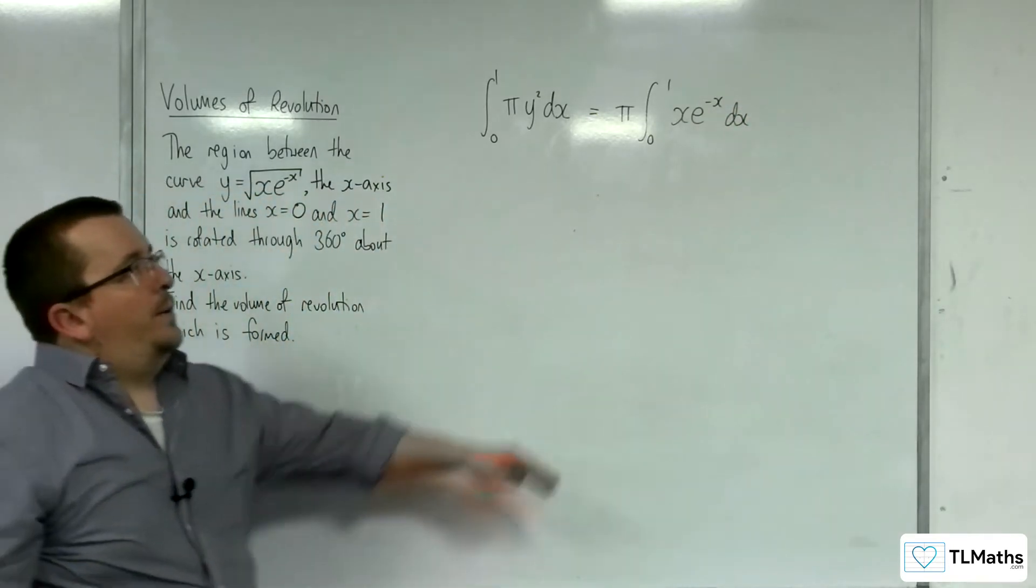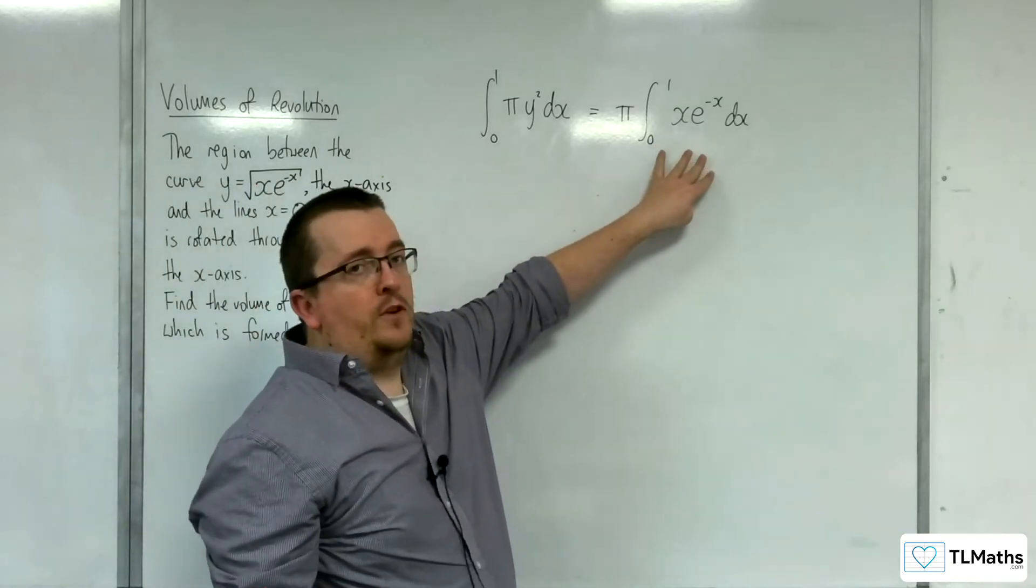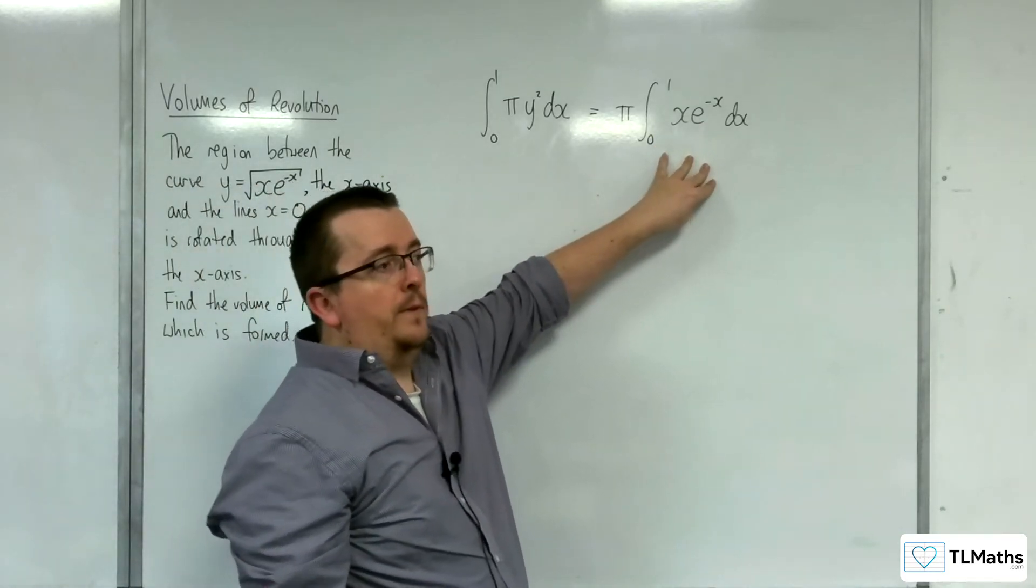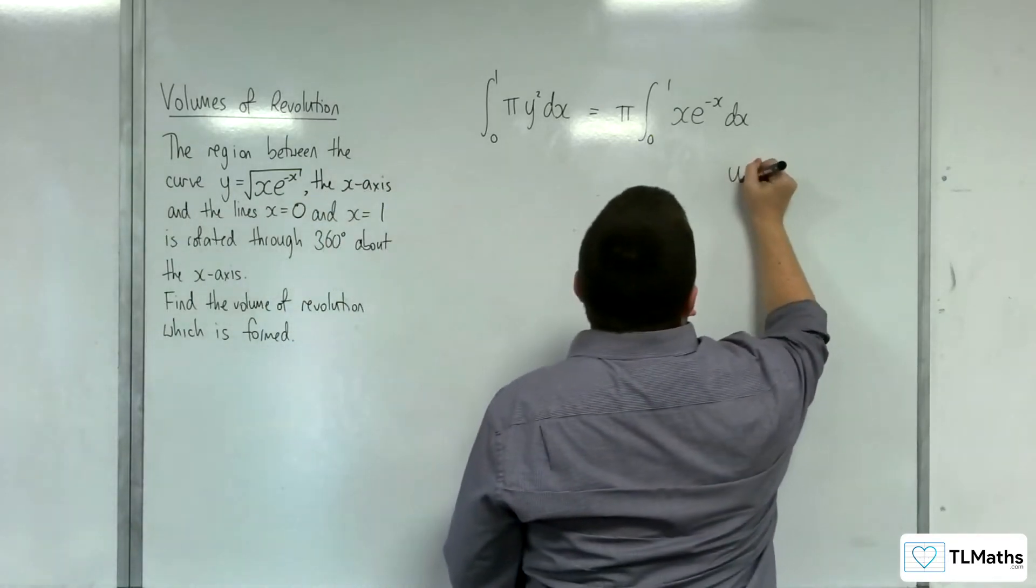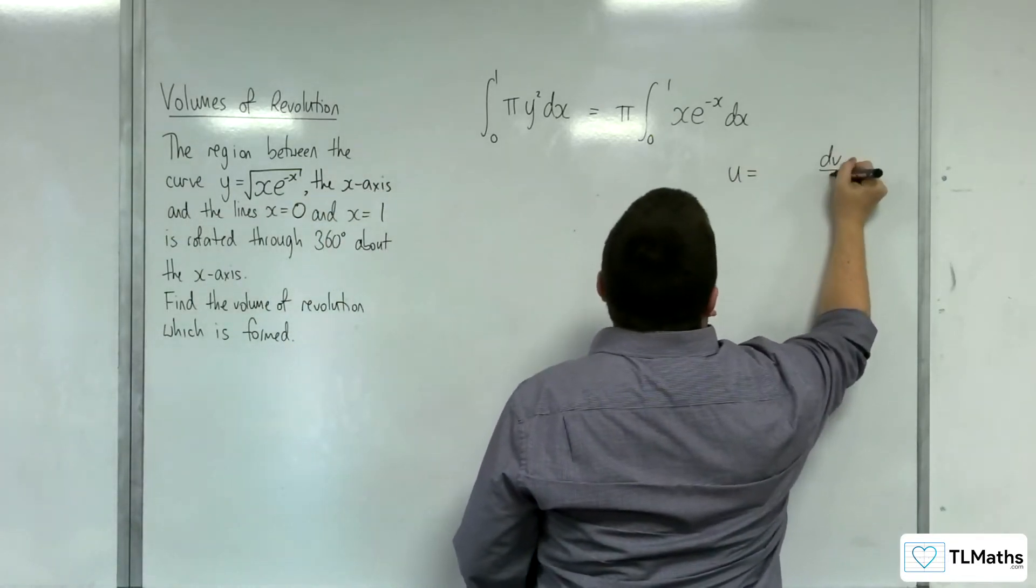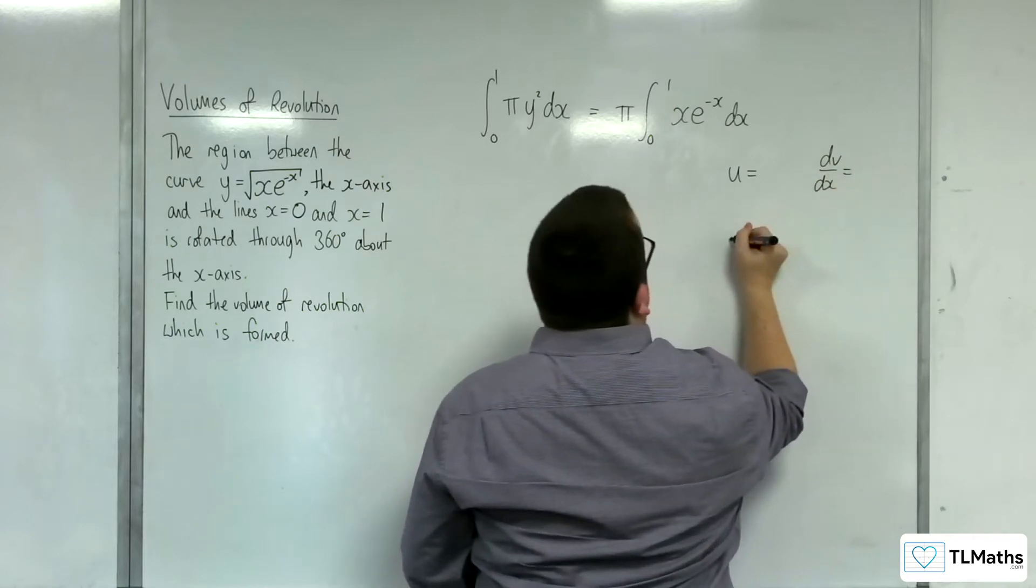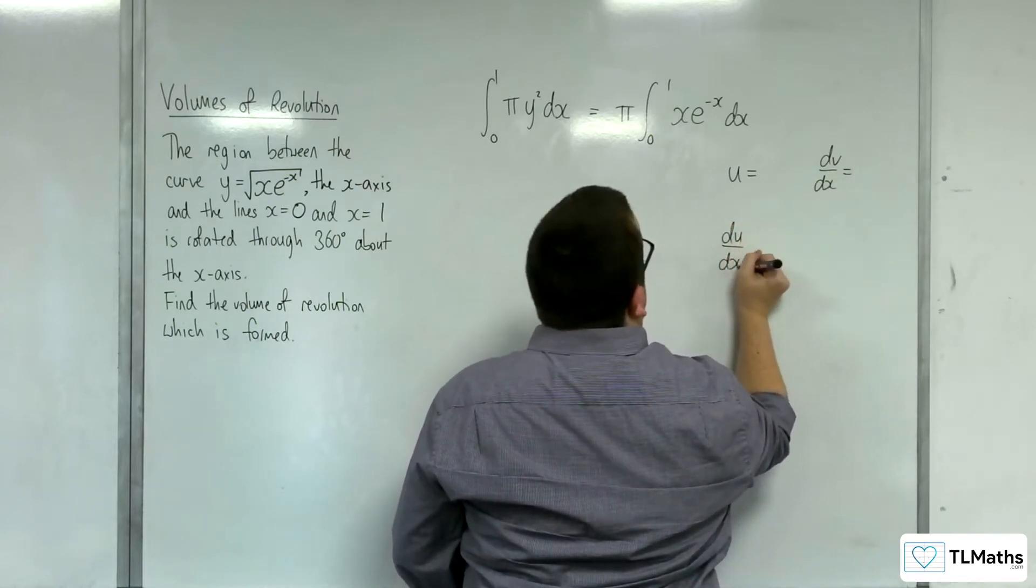Now in order to integrate this, we've got to use integration by parts. So for that, I'm going to need u and dv by dx, and I'm going to need du by dx, and v.